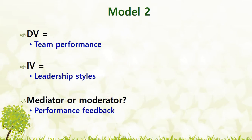Let me show you another example. Here, team performance is the dependent variable, leadership style is the independent variable, and the variable we have to classify is performance feedback. The IV to this variable relationship is causal in nature, as leadership style can definitely affect performance feedback, and performance feedback can affect team performance. So this variable has a causal relationship with both the DV and the IV. Thus we conclude that it would act as a mediator.